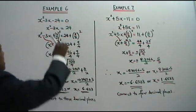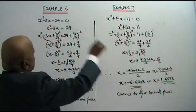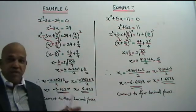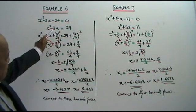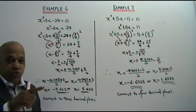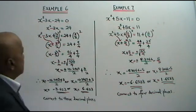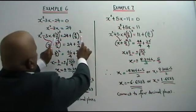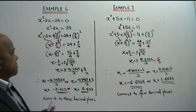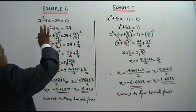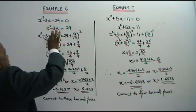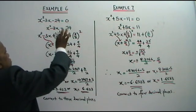Step number 1: negative 24, bring to the other side, you get positive 24. Now you take this number 3, divided by 2, square it, add to both sides of the equation. Now we have completed the square: x minus 3x plus 3 over 2, squared.